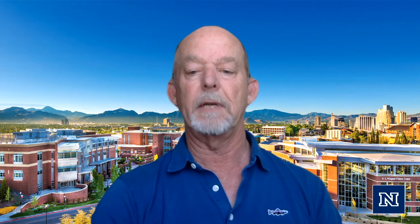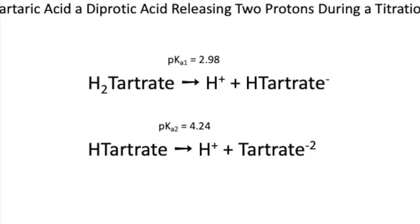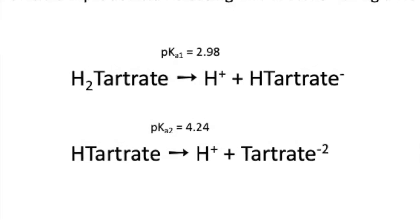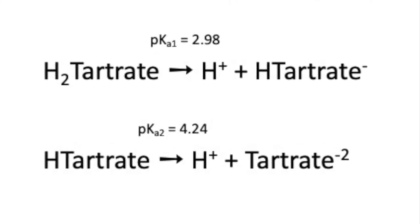Titration is a technique where a conjugate base or acid is added to a solution containing acid or base, respectively, until the molecular equivalence point is reached. Since tartaric acid is a diprotic acid, neutralization requires two moles of sodium hydroxide for every mole of tartaric acid, hence the factor in our calculations at the end of this video. In a sense, when we sip a glass of wine, our mouth is performing a TA measurement through the effects of TA on saliva flow.